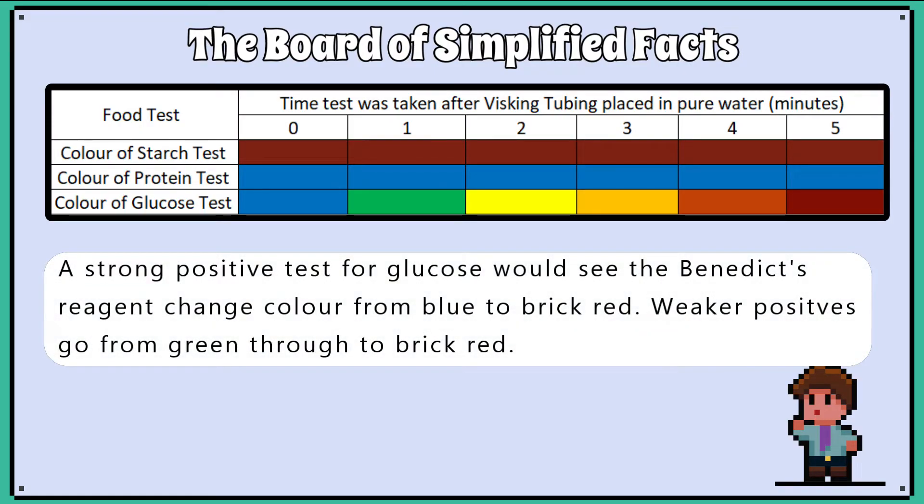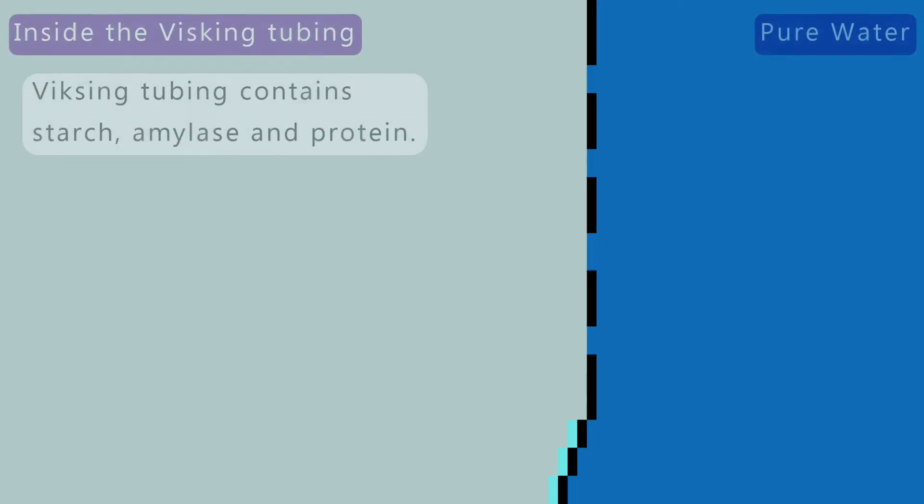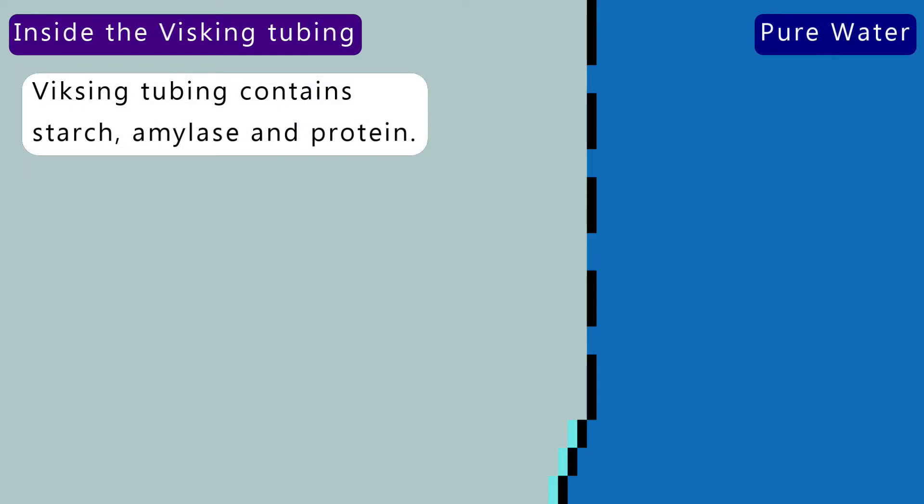Finally, the glucose test shows stronger and stronger positives as time passes. Remember we never put glucose inside the visking tubing, however the amylase has been breaking down the starch into glucose. The glucose molecules are small enough to diffuse through the pores of the semi-permeable membrane of the visking tubing.